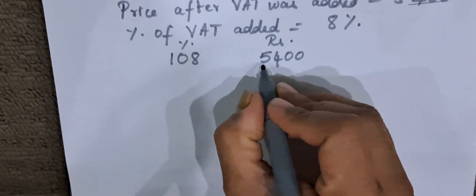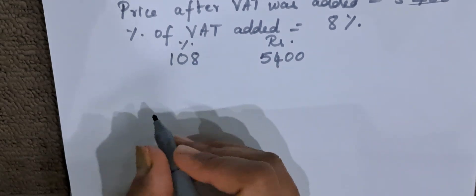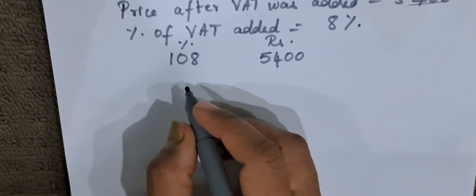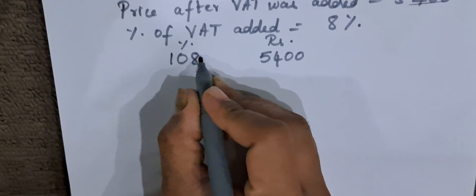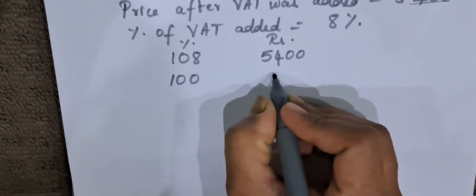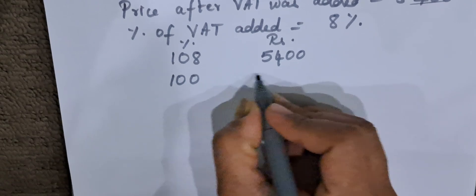108% means 5,400. Now they are asking the price of the hairdryer before tax. Now when we take out 8% tax, how much percentage it becomes? It becomes 100%. This is what they are asking: 100% is how much?